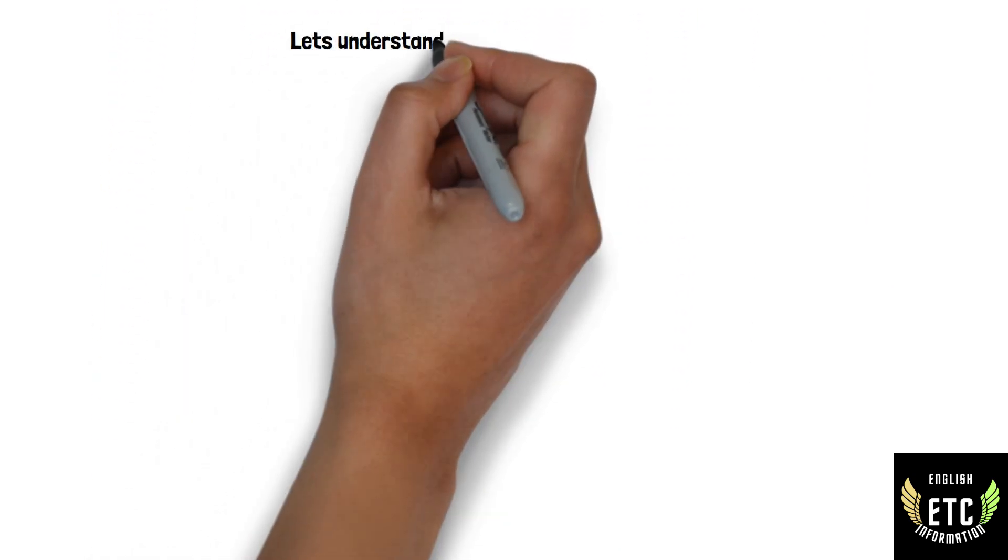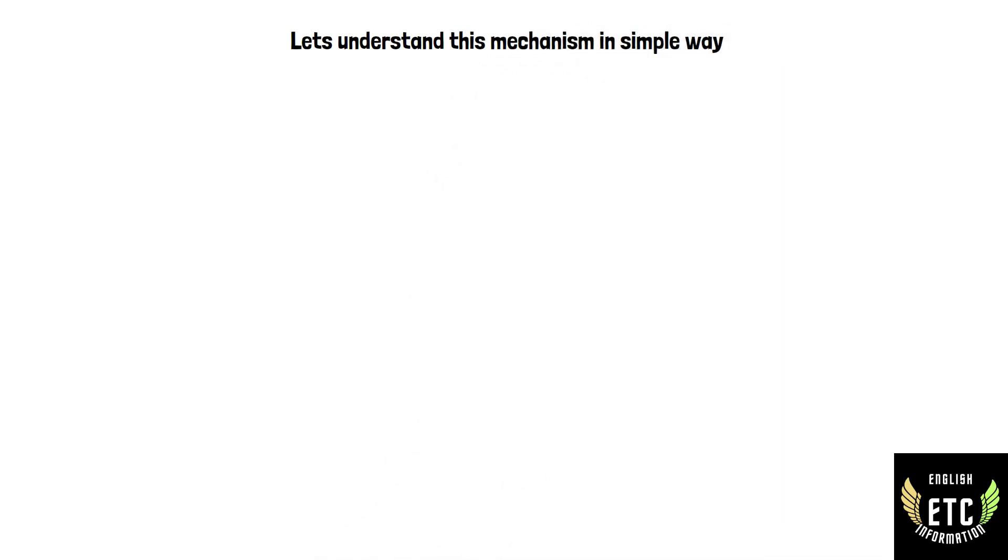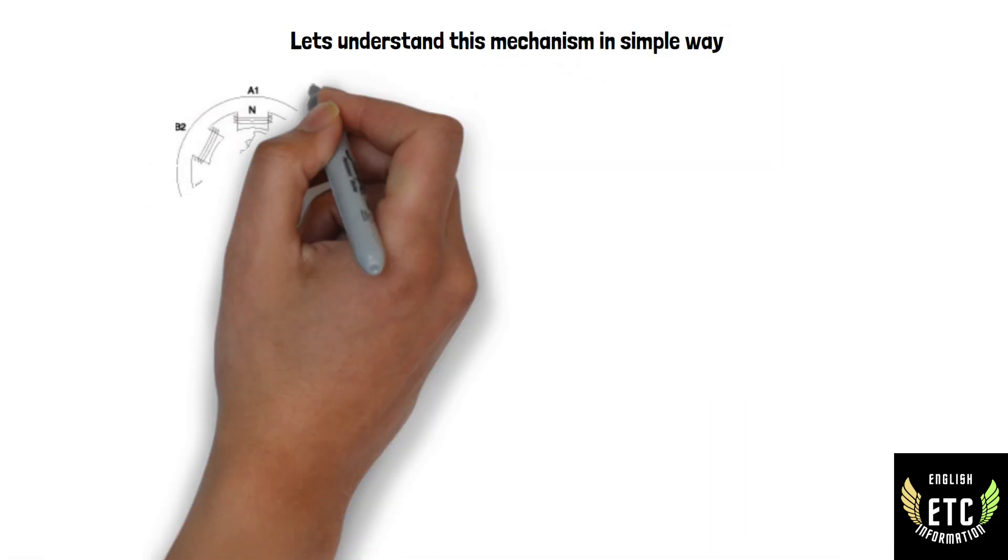Let us understand this mechanism through a diagram. As shown in the diagram, there are six magnetic poles in the stator and two poles in the rotor.